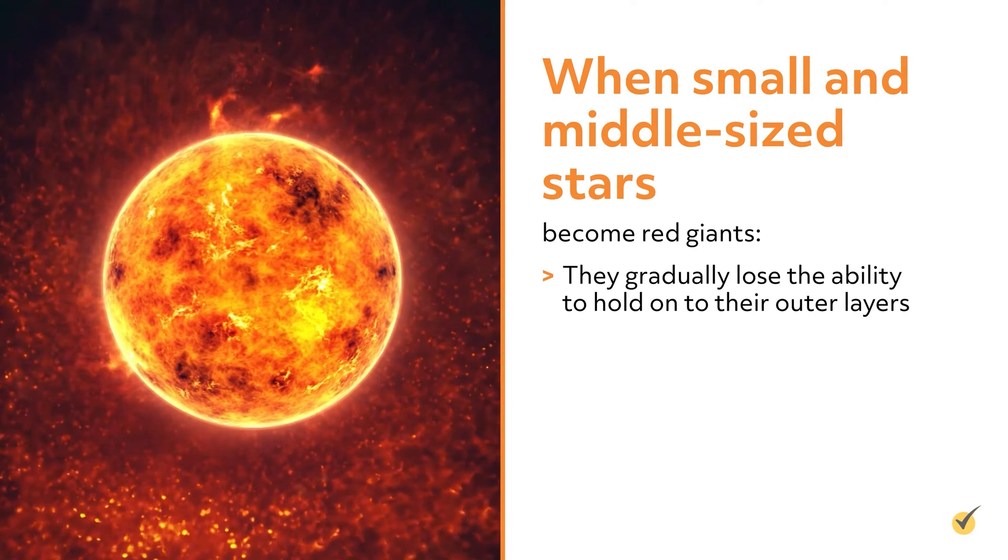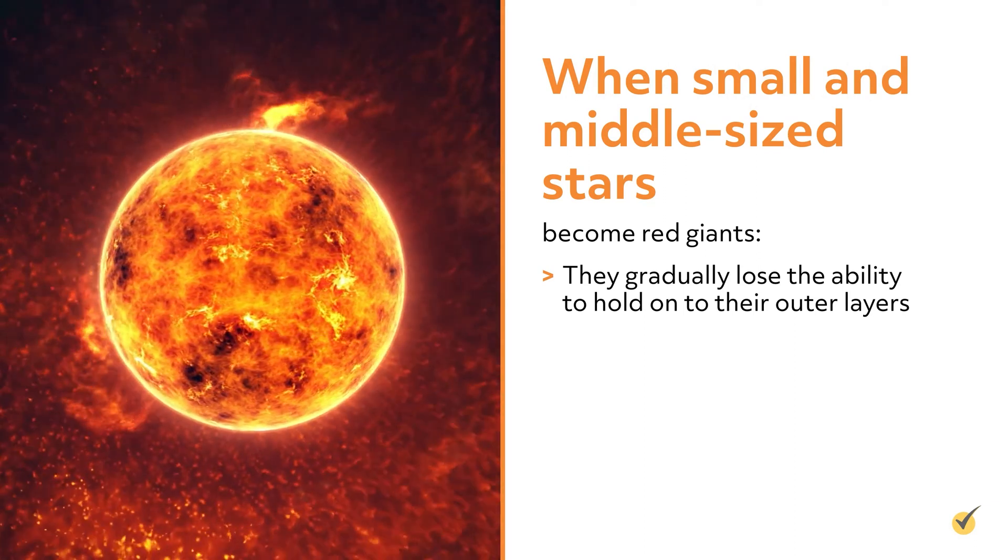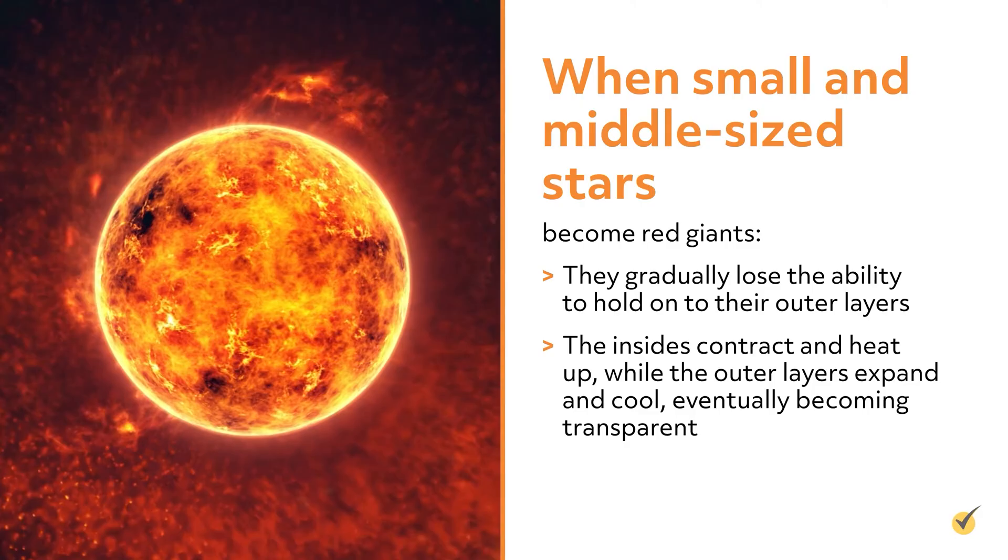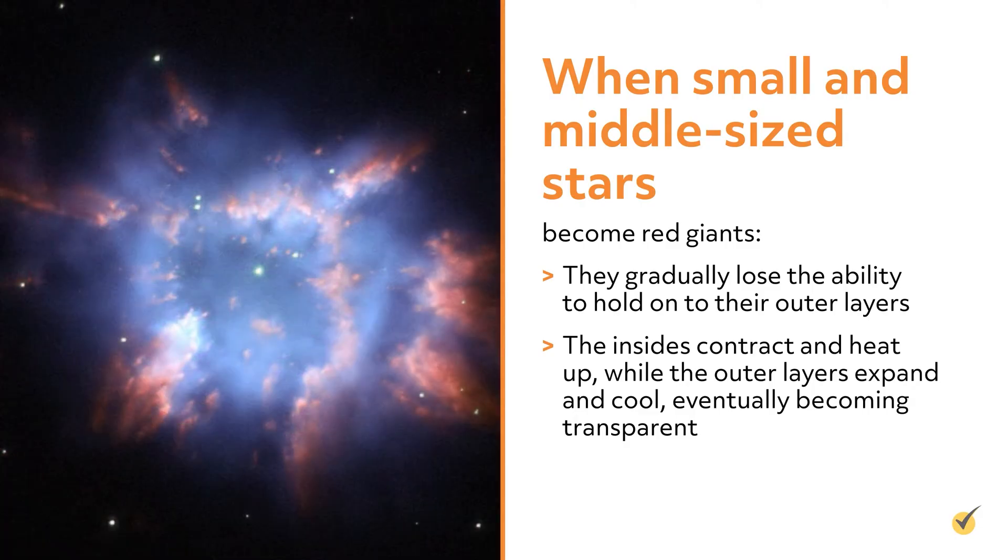When small and middle-sized stars become red giants, they gradually lose the ability to hold onto their outer layers. The insides contract and heat up, while the outer layers expand and cool, eventually becoming transparent.